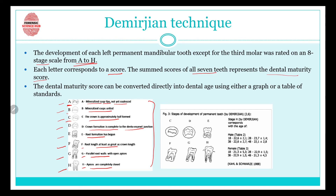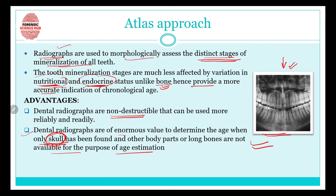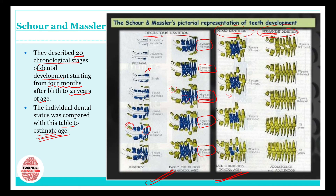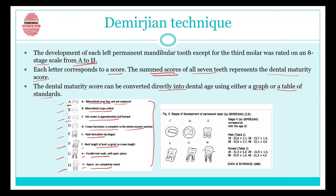We take the teeth whose age we need to estimate, sum the scores of all seven teeth, and get a dental maturity score. The dental maturity score can then be converted directly into dental age by using a graph or a table of standards. To summarize: the atlas approach uses radiographs and studies mineralization stages; in Schour and Massler there are 20 chronological stages representing teeth development which can be compared to an individual's dental status; and the Demirjian technique rates teeth from A to H.